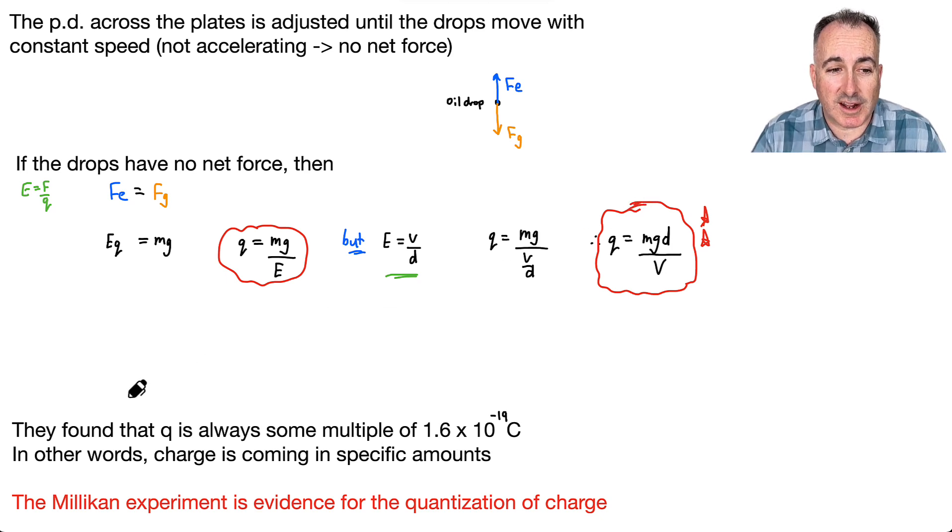And it turns out, what did they find? They found that this value of Q, this charge that they actually calculated, was always some multiple of some weird number. It was just 1.6 times 10 to the minus 19 Coulombs all the time. Like, oh, that's weird. It's always quantized. It's always coming in specific countable amounts.